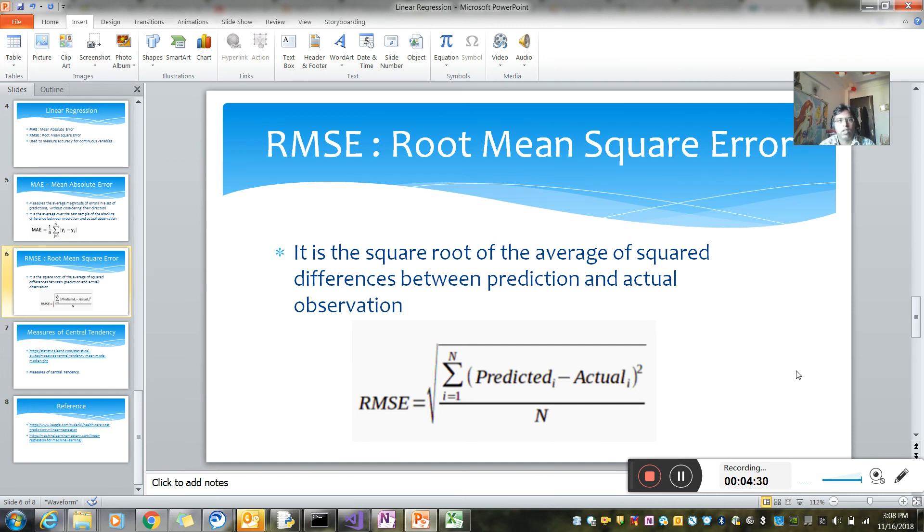Now, likewise, talking about RMSE, which is another term that we use to calculate the error in our predicted model. RMSE stands for Root Mean Square Error. It is the square root of the average of squared differences between prediction and actual value.